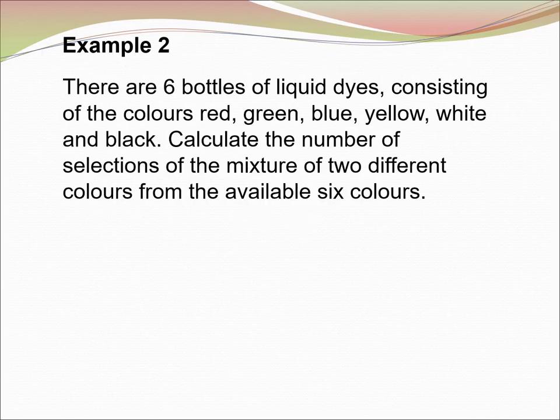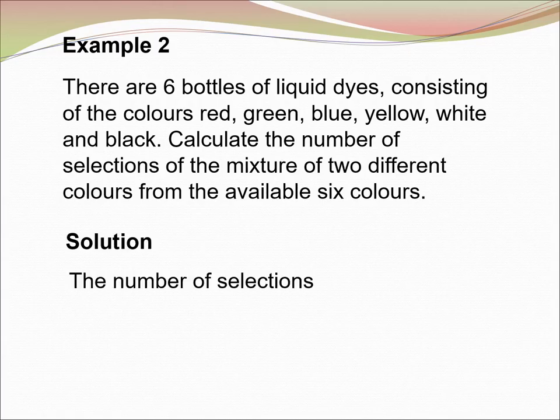Example 2. There are 6 paints of different types, consisting of the colors red, green, blue, yellow, white, and black. Calculate the number of selections of a mixture of 2 different colors from the available 6 colors. We have 6 colors and we want to select 2. So, the number of selections is 6C2 equal to 15.